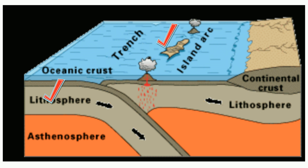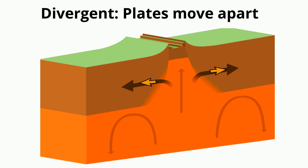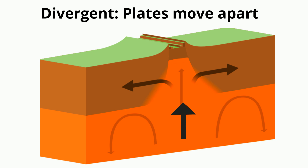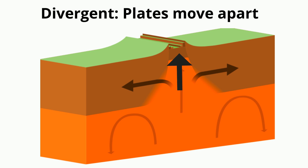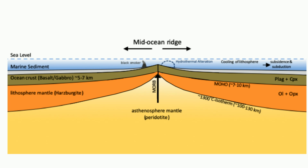Next you have divergent boundaries. This is when two plates move away from each other. The separation allows the asthenosphere to rise towards the surface and partially melt. This melting creates magma, which erupts as lava, and then the lava cools and hardens to create new rock and ocean floor or new continental crust. As the crust and upper part of the asthenosphere cool and become rigid, they form new lithosphere, like mid-ocean ridges.